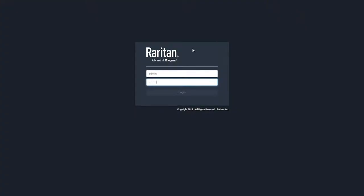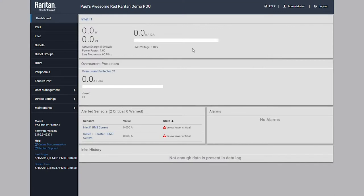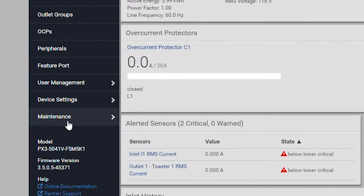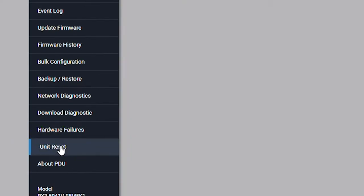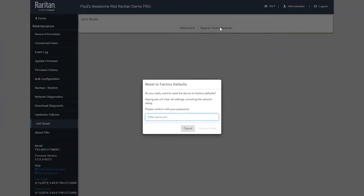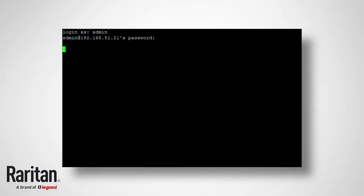When resetting to factory defaults, it's a similar process to a regular remote reset. In the web GUI, the button is located under the same maintenance menu as a regular reset. In the command line, there's a dedicated command to execute this process.